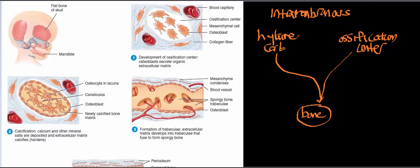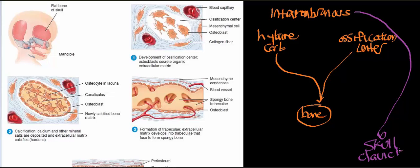In intramembranous ossification, we're talking about the bones of the skull — and we'd also include the clavicle in that list. The flat bones of the skull, which are fused together with sutures, are formed by intramembranous ossification, as is the clavicle. But the end result is the same: a fully functional mature bone, just achieved in different ways.